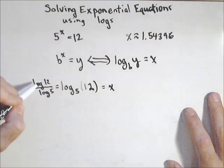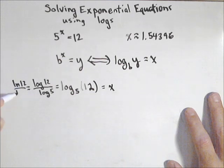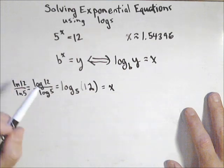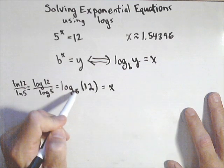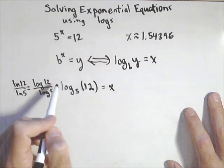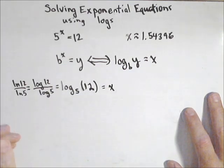Now these could be any logs. We could actually do this as ln(12) / ln(5). As long as these logs have the same base, this is always gonna be true. And the nice way to remember it is, the base is already lower, so that's what goes on bottom. The number goes on top. So that's one way of thinking about solving this.